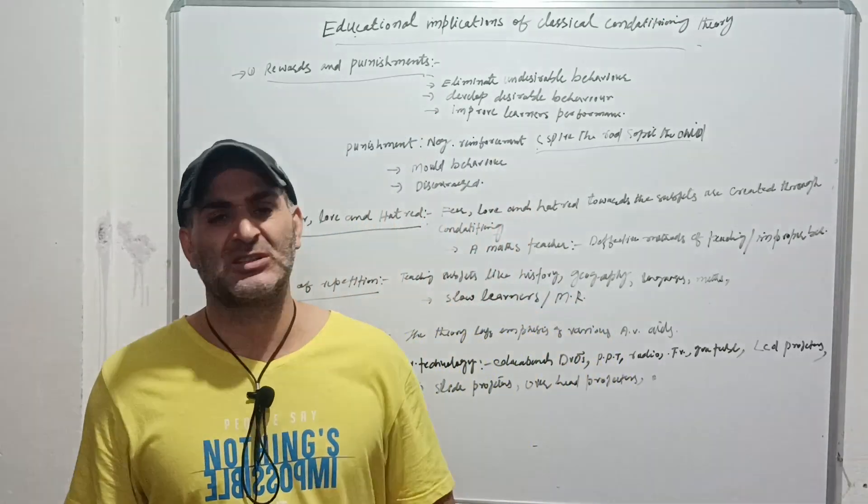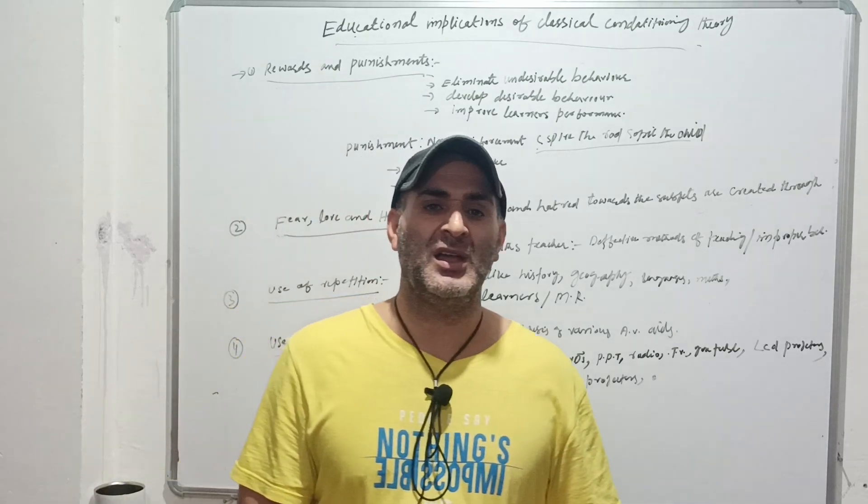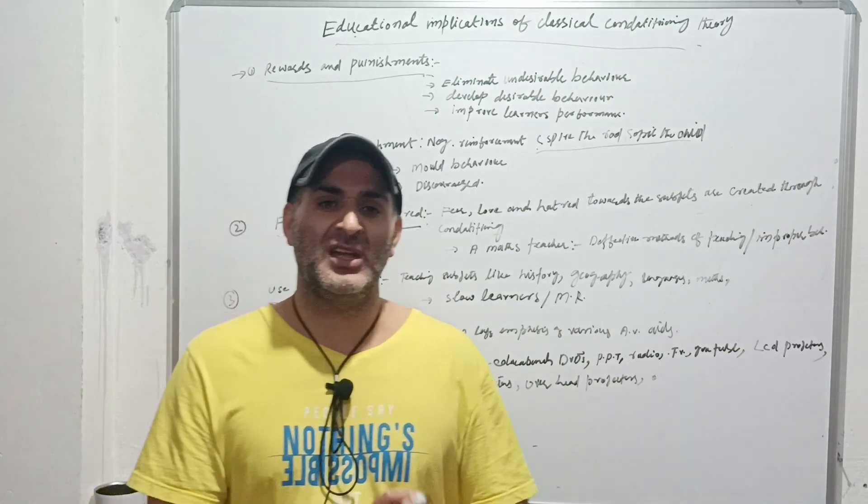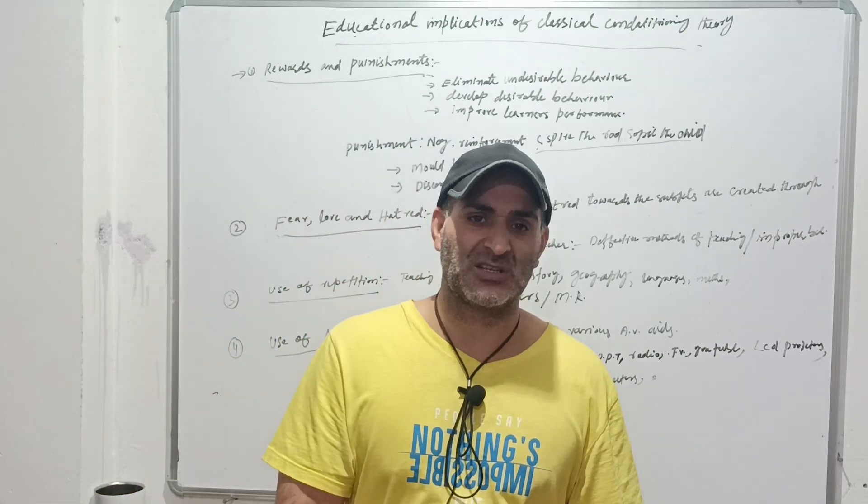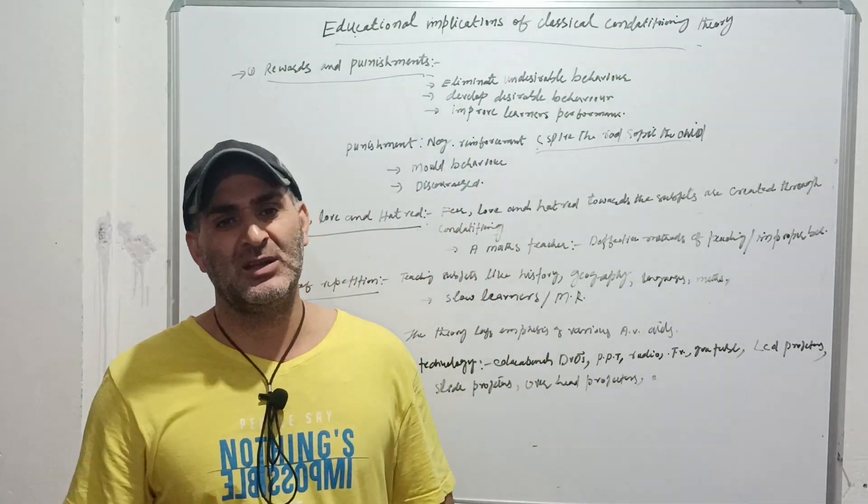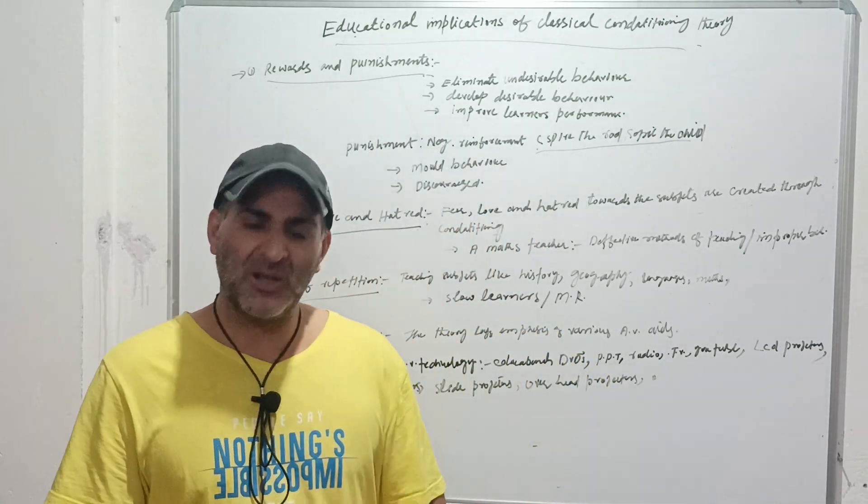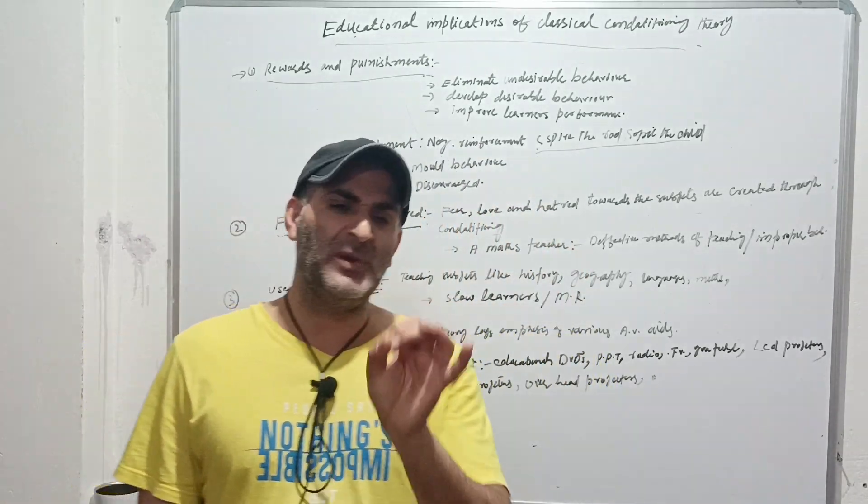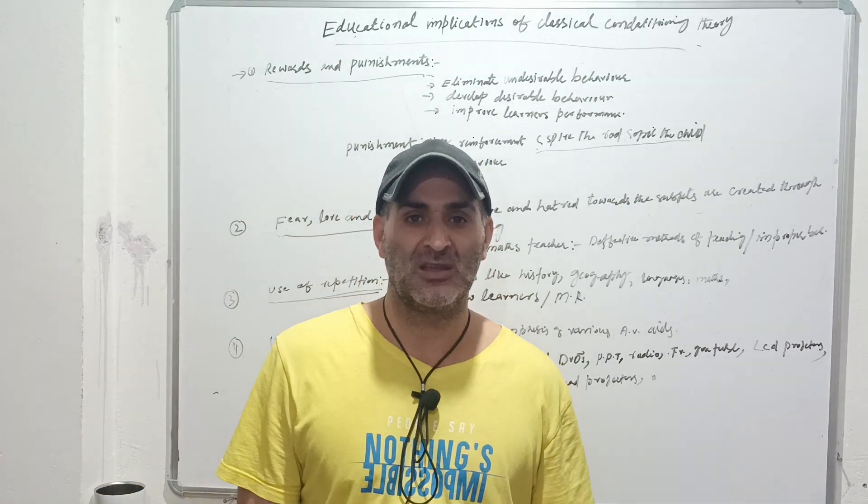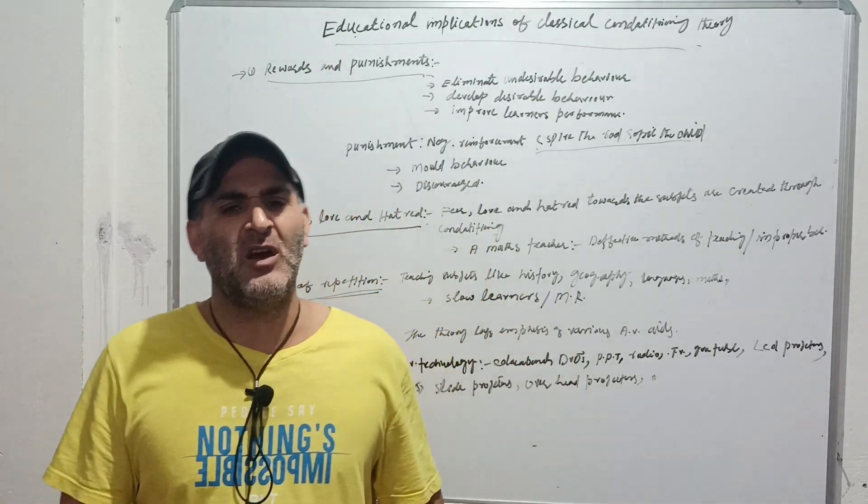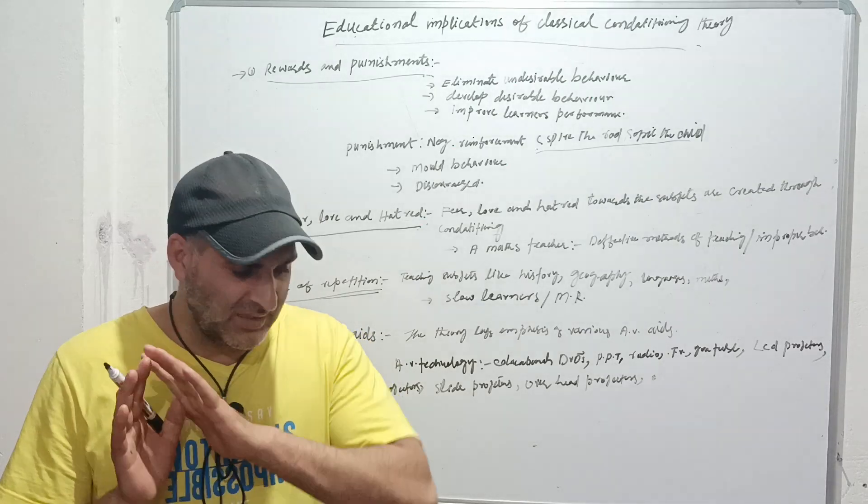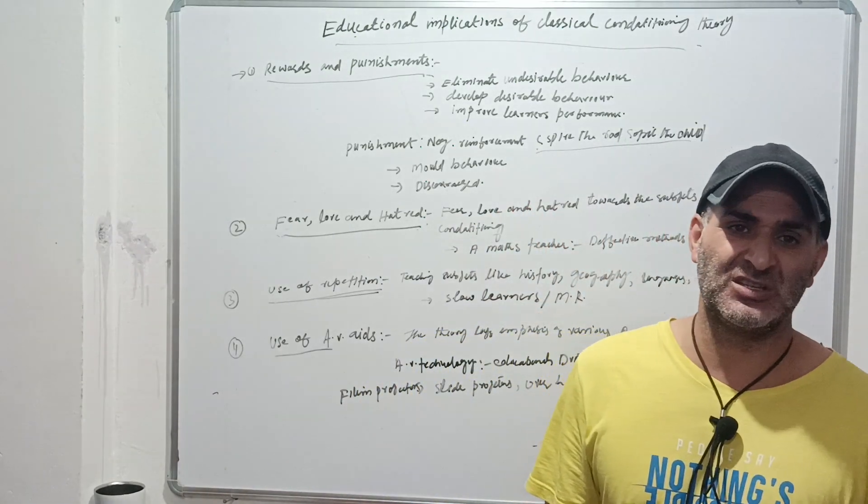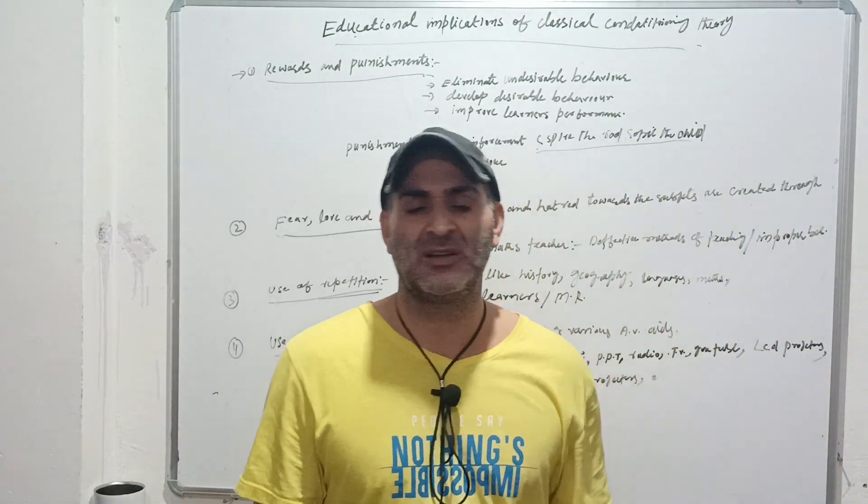If we have to study any subject—whether it is geography, history, language, mathematics, or any other social science subject—teachers should always believe in the repetition method. Because there are five fingers in the hand and all are not equal. Teacher should completely drill the students. Because the classroom is always heterogeneous. When the teacher enters the classroom, they have to face the heterogeneous society. Because no two learners are alike.